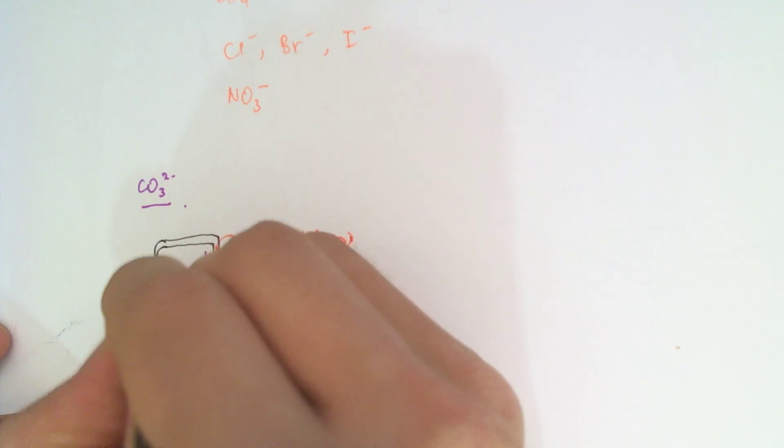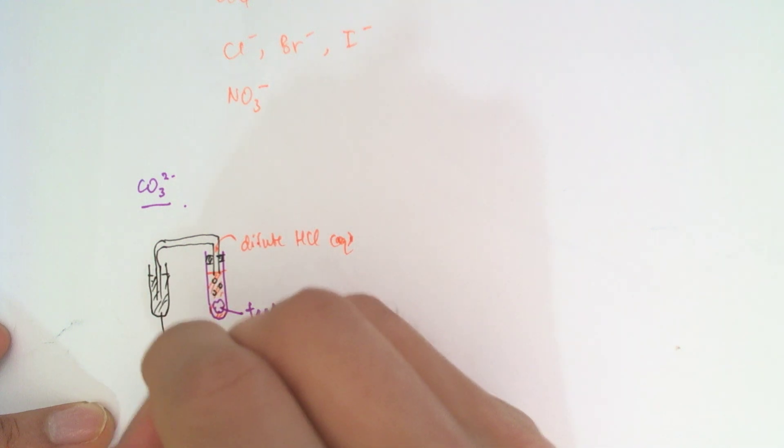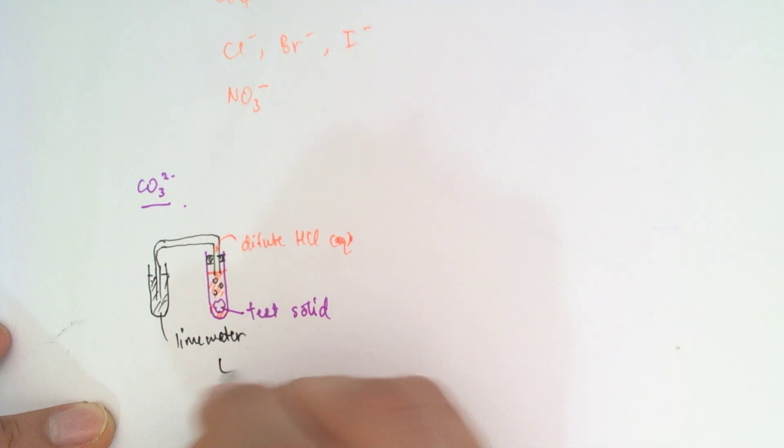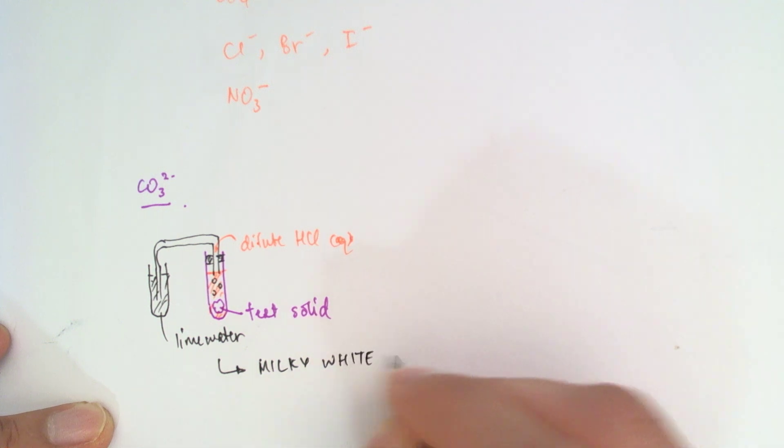Take that gas and channel it into a test tube of lime water. So I'm going to have some lime water here. And if carbonate is present, what you'll see is that the lime water is going to turn milky white. You'll see a milky white precipitate here.